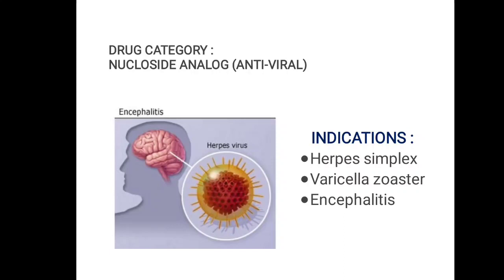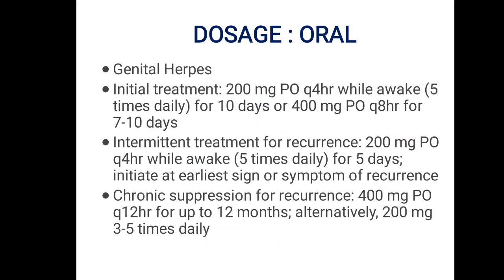The indications of acyclovir: it is used in the treatment of herpes simplex, varicella zoster, and encephalitis. The dosage form is available in oral form and is used in the treatment of genital herpes — initial treatment: 200 mg per oral every 4 hours while awake for 10 days.